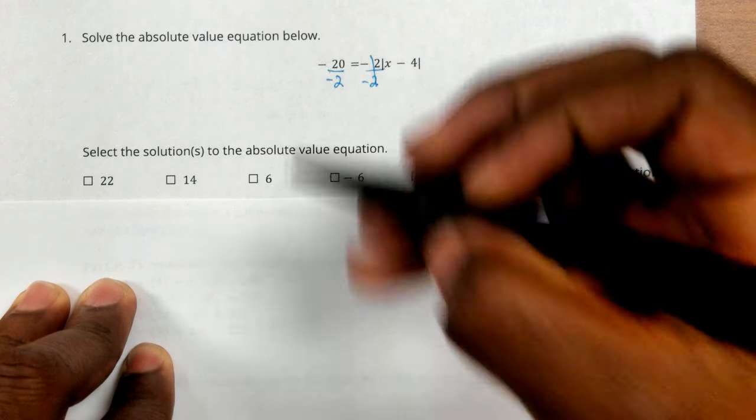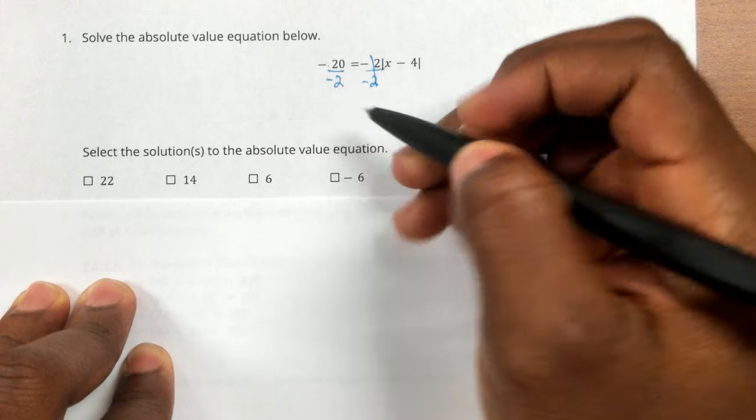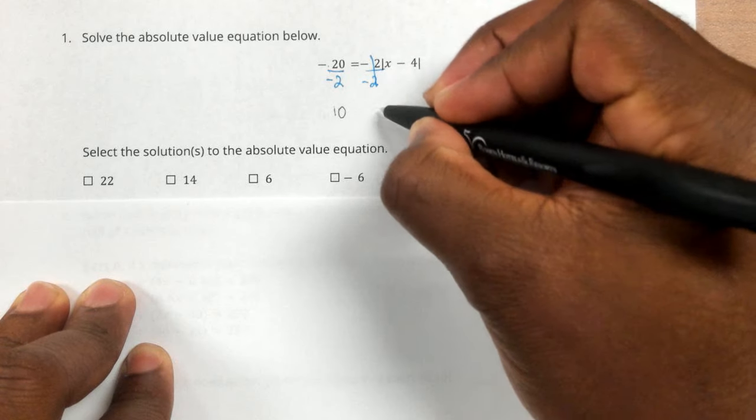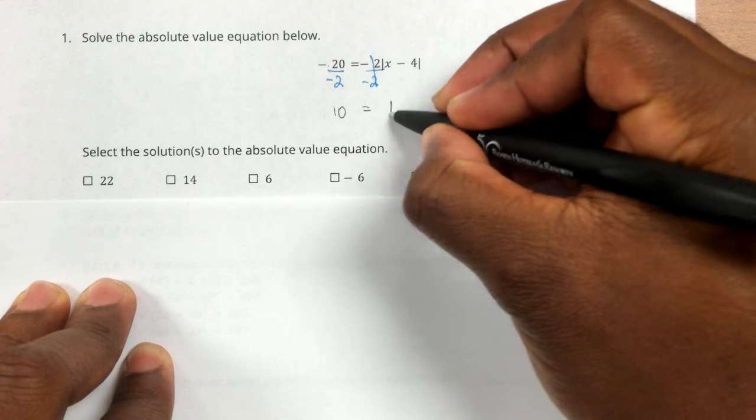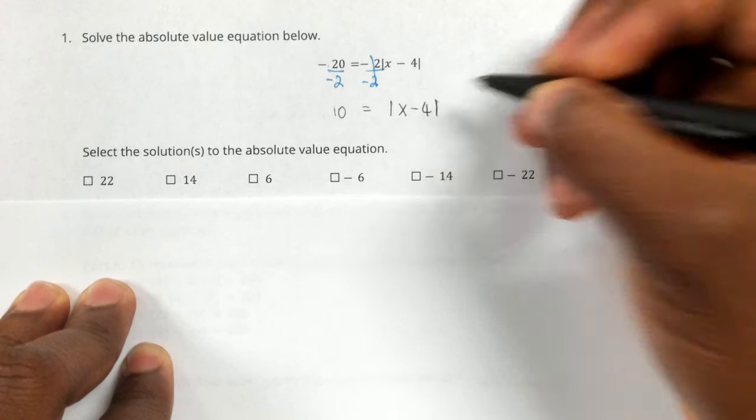So these negative 2's cancel. Negative 20 divided by negative 2 is positive 10, is equal to the absolute value of x minus 4.